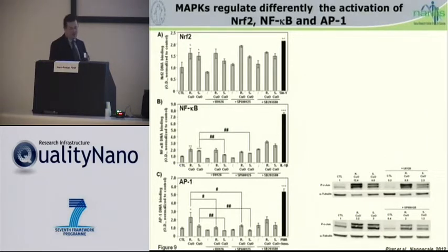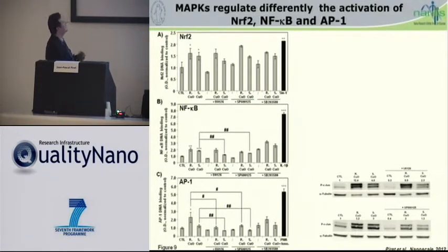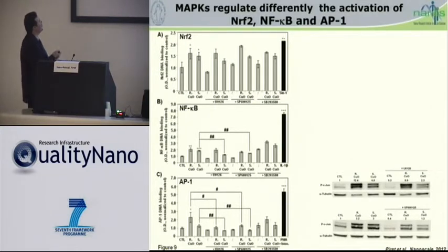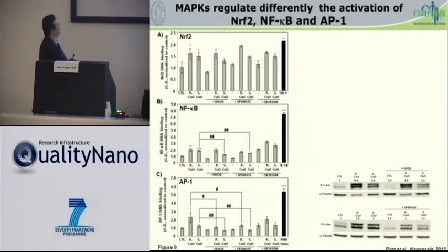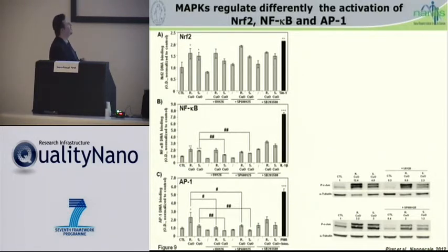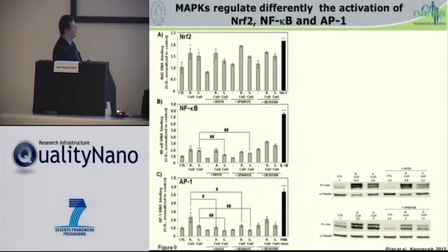Next, we wanted to determine whether these MAP kinases could modulate the activation of the three transcription factors. Using chemical inhibitors, none of these inhibitors were able to reduce the activation of NRF2. However, for NF-κB, we observed that the ERK inhibitor and the JNK inhibitor slightly reduced the activation of NF-κB, and similar results were obtained for AP1. We confirmed this result for AP1 by following the phosphorylated form of c-Jun: using ERK inhibitor or JNK inhibitor, we were able to decrease the amount of phosphorylated c-Jun.